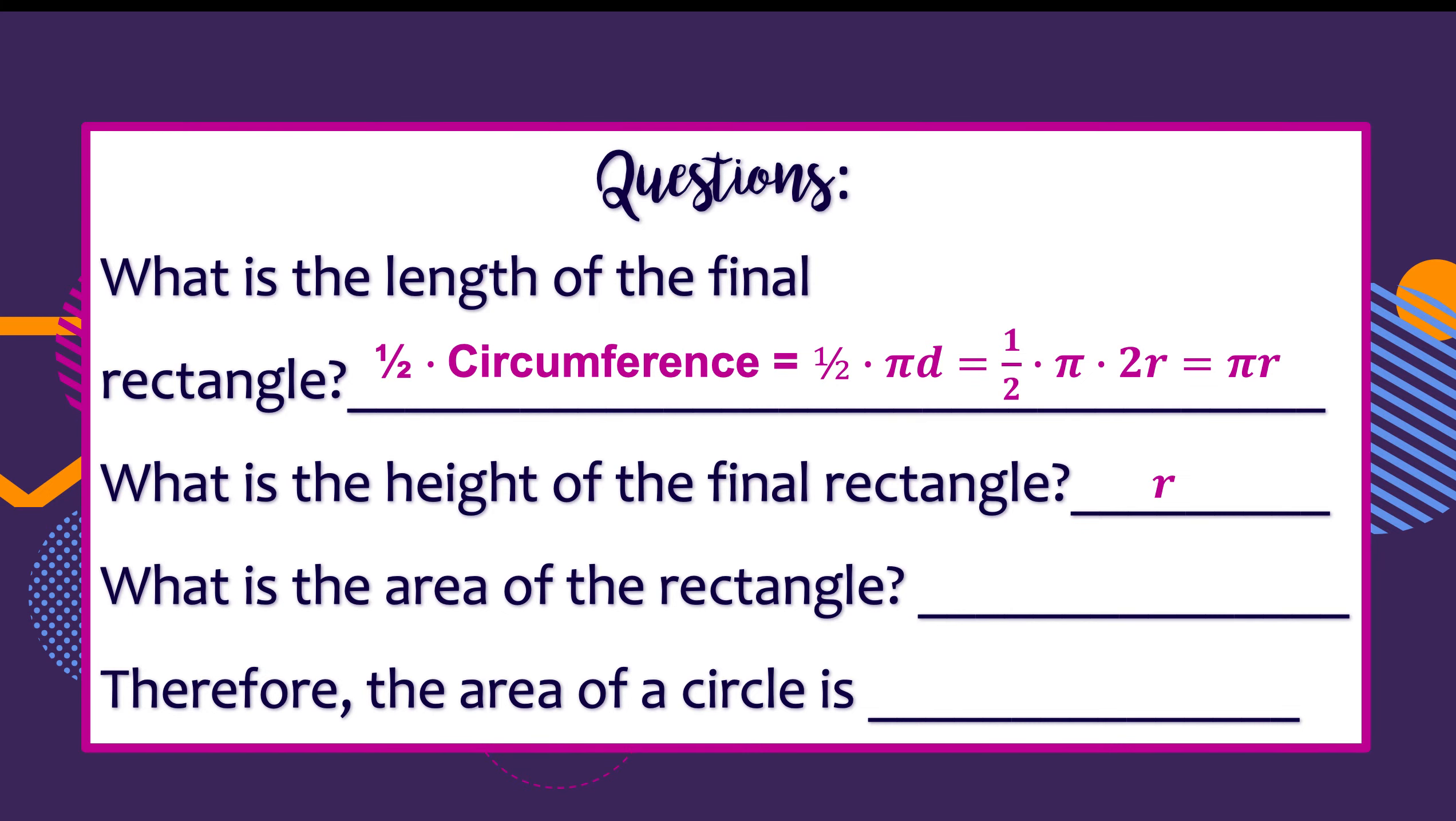The height of that rectangle is r. The area of the rectangle, as we know, is base times height or length times width. In this case, I'm using length and height. So length times height is πr multiplied by r. Therefore, that means that the area of the circle—all we did is rearrange those pieces of the circle, that's why it's called a rearrangement proof—ends up being πr². That's how we find the area of a circle.